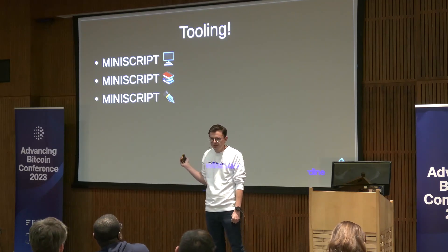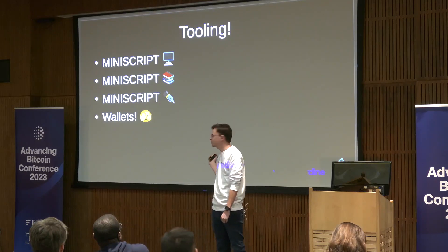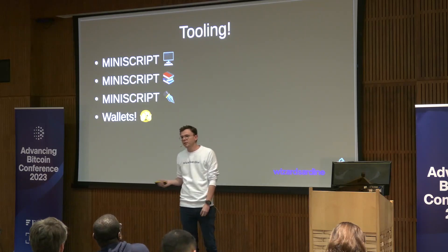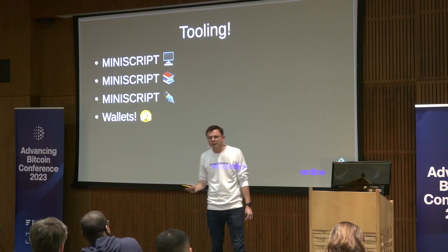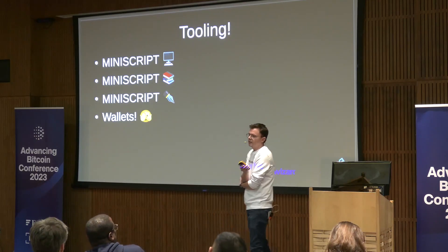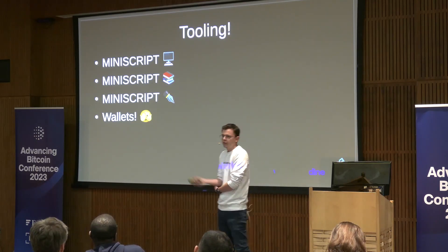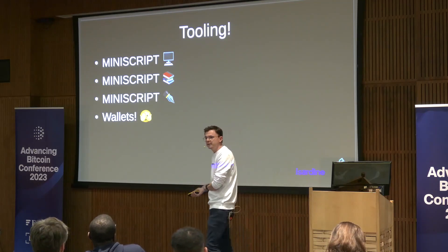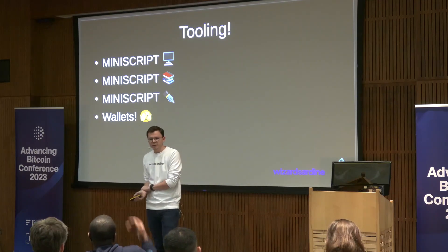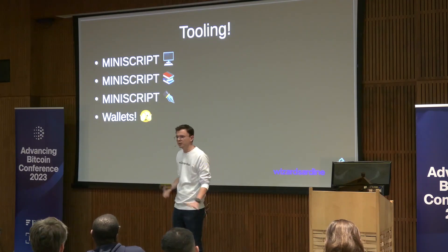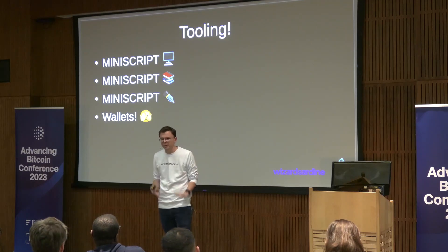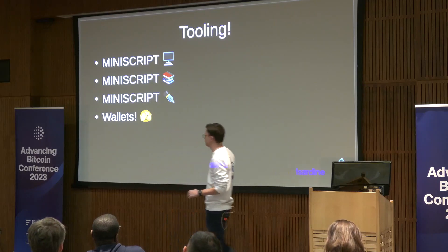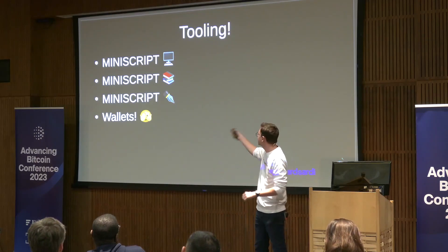Now wallets are starting to support this as well. Bitcoin Core, Liana, Sparrow (which understands descriptors and can spend from miniscript), and My Citadel — quite a few wallets already understand this, and they're all compatible with each other. You can generate your wallet on one and just import it to another and spend from it. This is a big game changer, and all of that has happened in just the past few months.